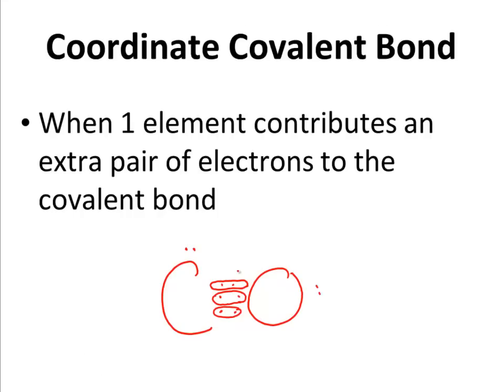So what I want you to see is that this pair of electrons right there is my coordinate covalent bond. And that is when one element contributes an extra pair of their own electrons.